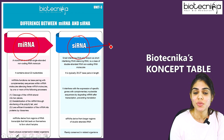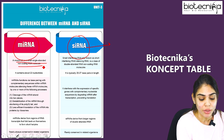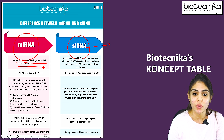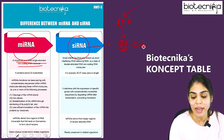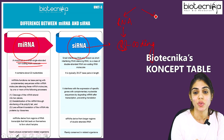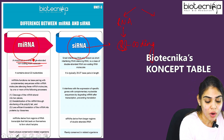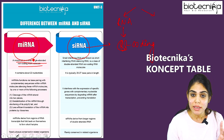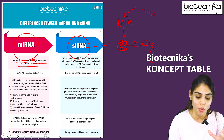Now let's understand the difference between miRNA and siRNA. miRNA is a small single-stranded non-coding RNA molecule. RNA molecules can be coding or non-coding. If an RNA molecule is coding, it expresses for the gene. But if it is non-coding, it never expresses a gene — it interferes with the gene expression process. So miRNA is small, single-stranded, and non-coding because it interferes with gene expression.